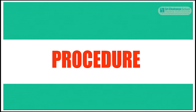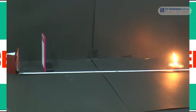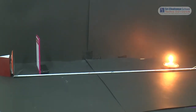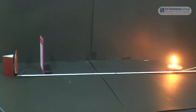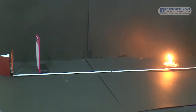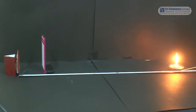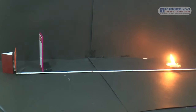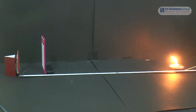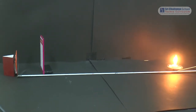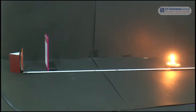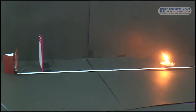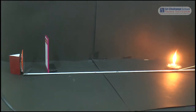The procedure of this experiment is: place the concave mirror, candle, and the measuring tape as shown in the figure. By keeping the candle at different distances from the mirror along the axis and by moving the screen, find the position where you get a sharp image on the screen.